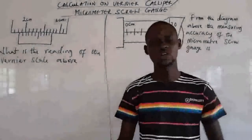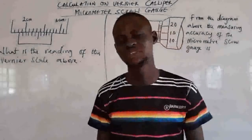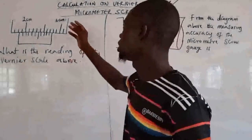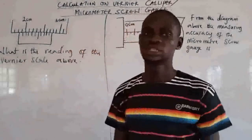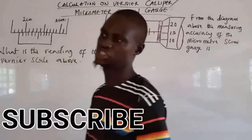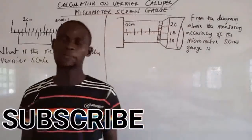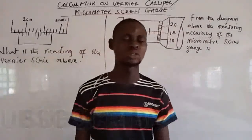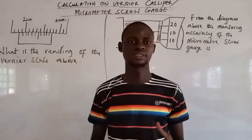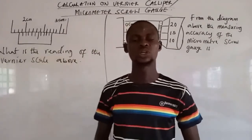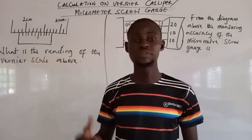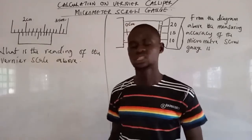Hello guys, welcome back to my channel. Today we are going to be looking at calculation on vernier caliper and micrometer screw gauge. In my previous episode, we took a look at each of these instruments and their accuracy. So we want to make use of the accuracy to calculate the readings on these instruments.